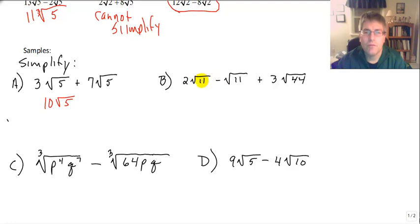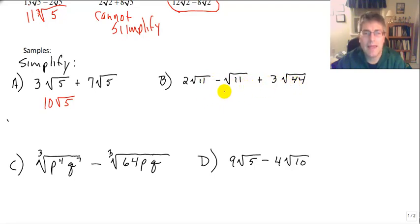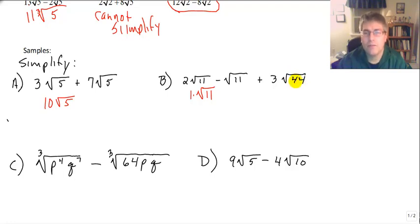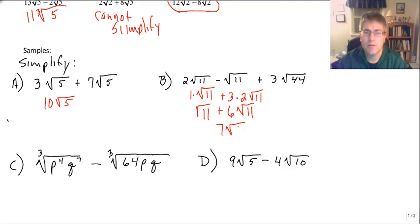Now we have 2 square root of 11 minus 1 square root of 11 plus 3 radical 44. The square root of 44 and radicand 11 are not like, so we can't directly add those. We can do 2√11 minus √11 to get 1 times √11. The square root of 44 has a perfect square in it — 4 — so it equals √4 times √11, giving us plus 3 times 2√11. So we have √11 plus 6√11, and 1 plus 6 is 7, giving us 7 square root of 11.